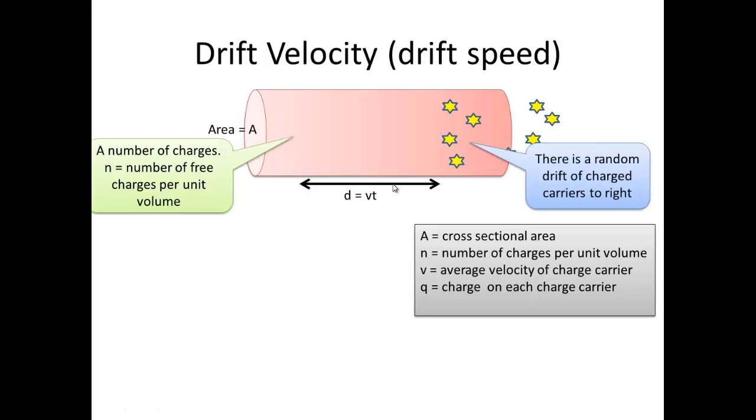So this random drift is the drift velocity. Let's look at some terms here. The volume is equal to the area times the distance that it's traveled, but we know the distance is equal to vt, so the area times vt gives the volume.